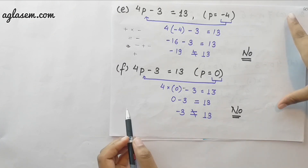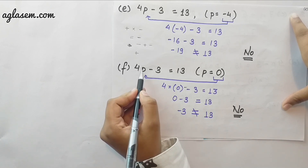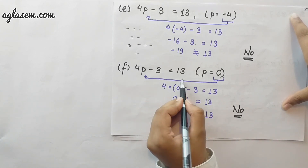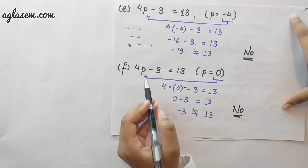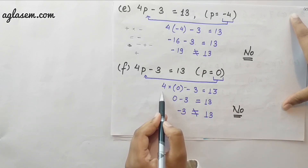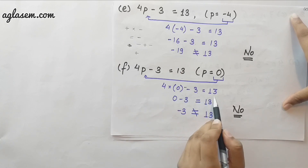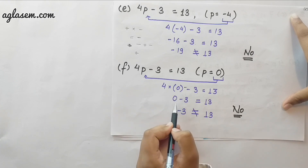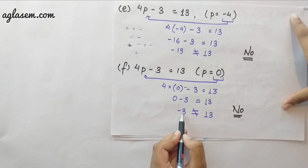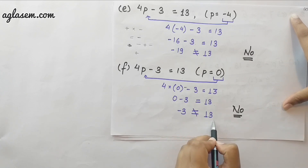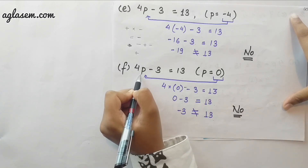In the sixth question, the equation is 4p minus 3 equals to 13 and the value of p is 0. We put 0 into the equation: 4 into 0 minus 3 equals to 13. 0 minus 3 is minus 3, which is not equal to 13, so this value of p does not satisfy the equation.